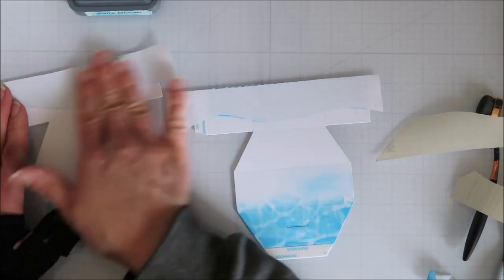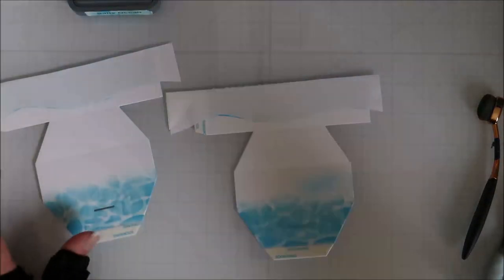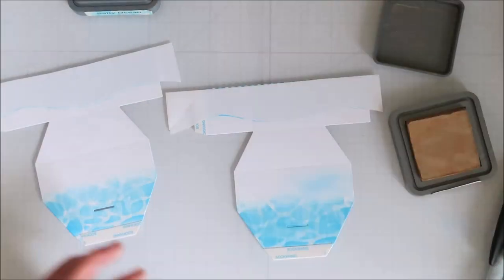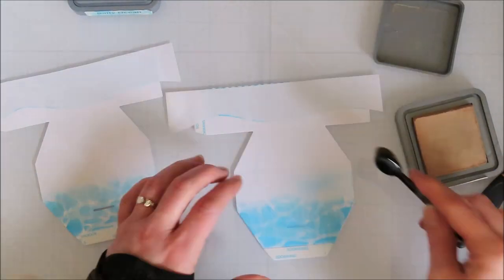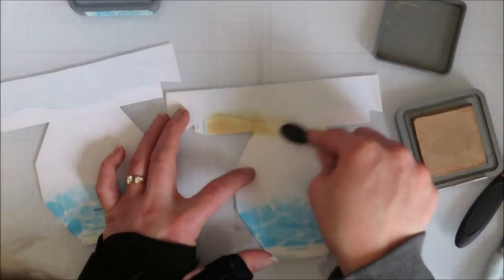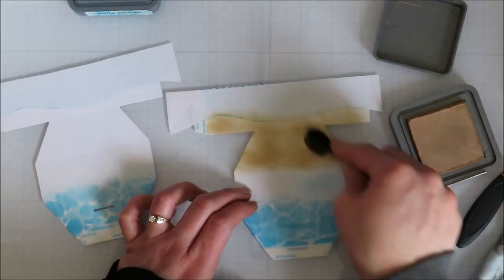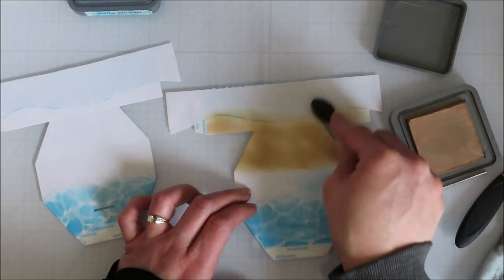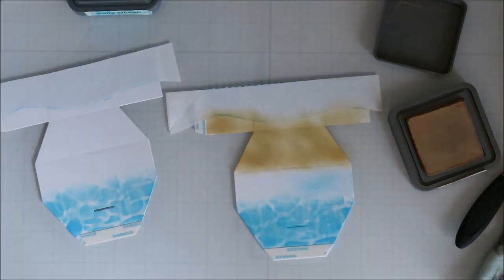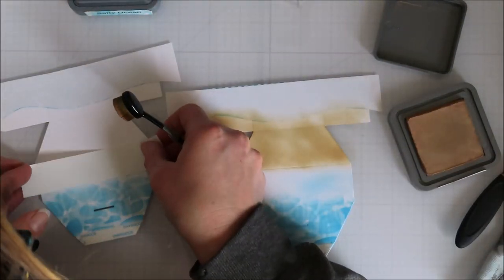And then I will come in with some tea dyed distress oxide ink and do my sand. And because I didn't mask off the bottom on this one, I ended up just making sure that that whole bottom of the box was colored.